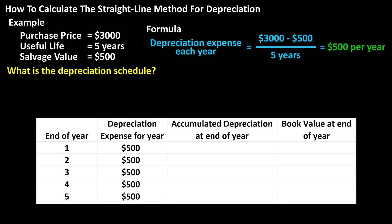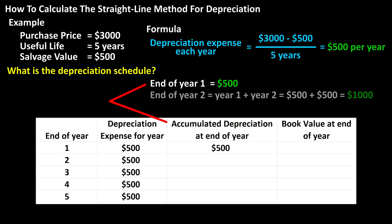For the third column, accumulated depreciation at end of year, this is the total amount of depreciation accumulated at the end of each year. So at the end of year 1, the total amount of depreciation will be $500. At the end of year 2, the accumulated depreciation will be the depreciation for year 1 and year 2, so $500 plus $500, which is $1,000.